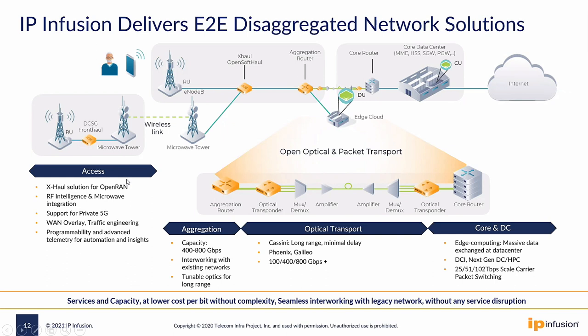Once we started getting that access part completed — basically on the wireless as well as from the wireline side, broadband access by way of passive optical networking, carrier Ethernet networking, and the standard IP and MPLS networking already in place in most networks today — we moved on to aggregation optical transport, and finally to the core.